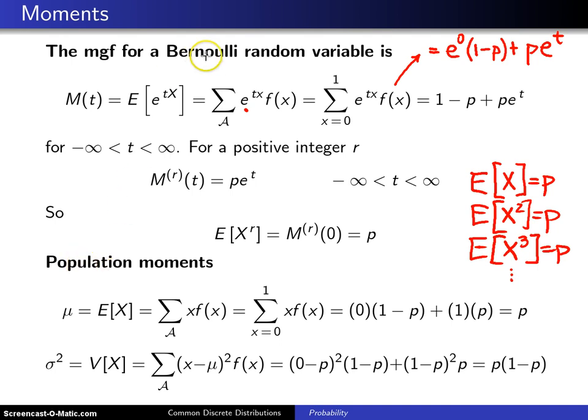If instead of using moment generating functions to generate these moments you wanted to go back to first principles, you could use the defining formulas. We don't have to do this because we've already got the mean, but this is just to show you get the same thing. So μ is the expected value of X, which is the sum of xf(x) over the support script A.